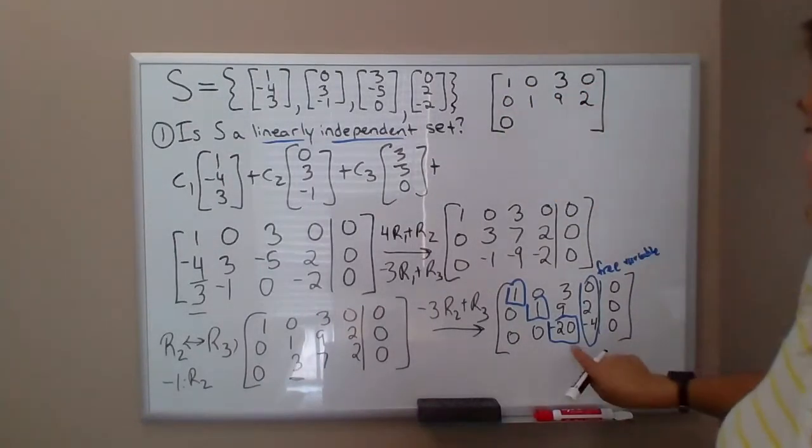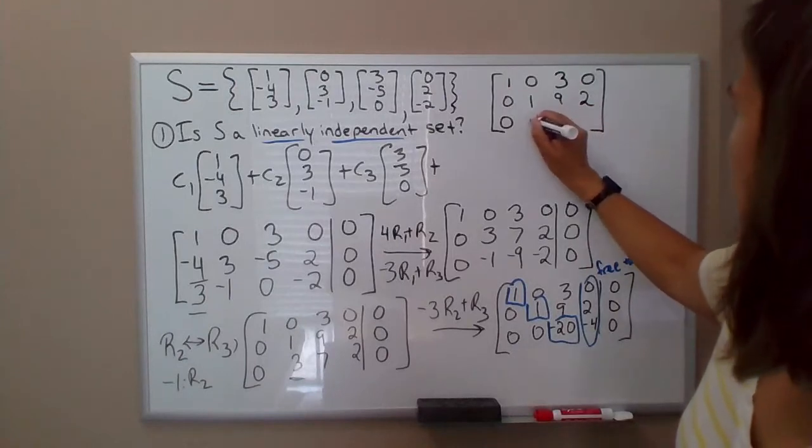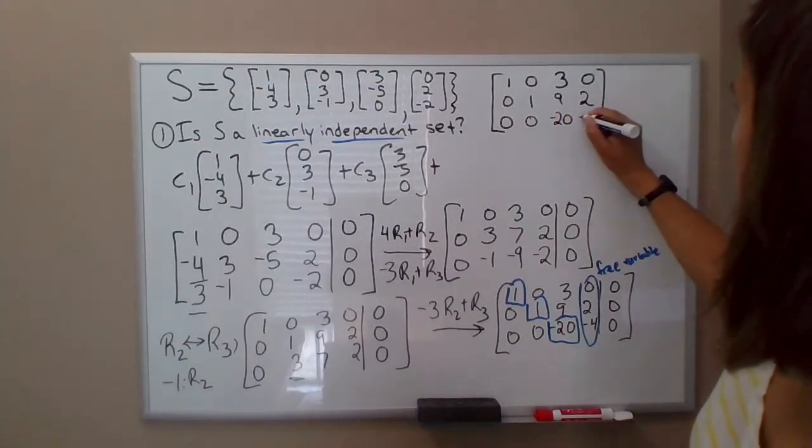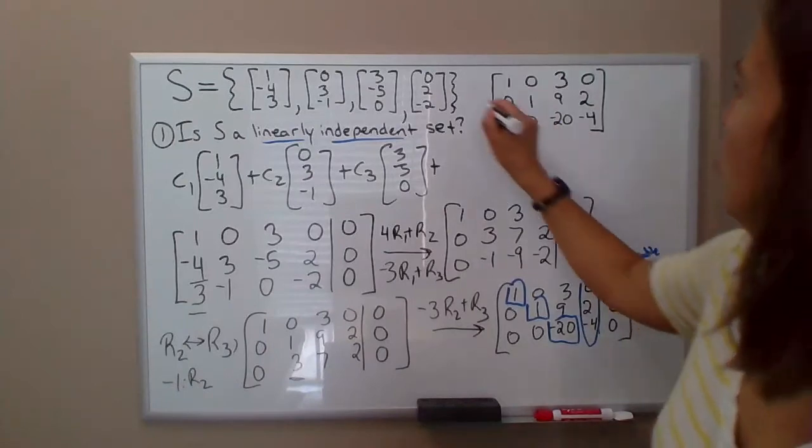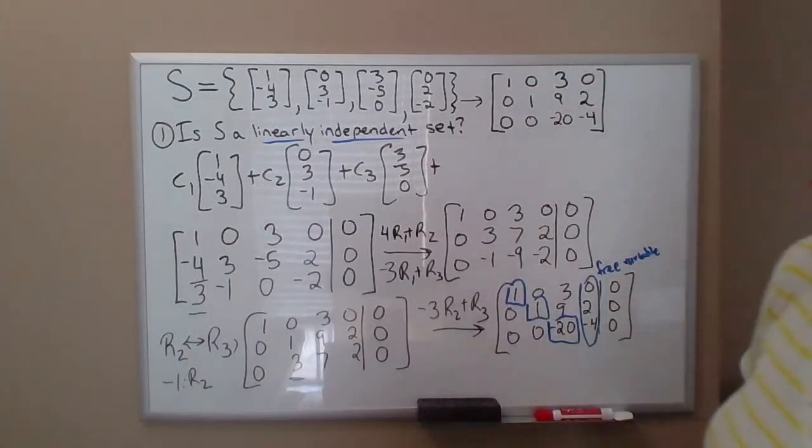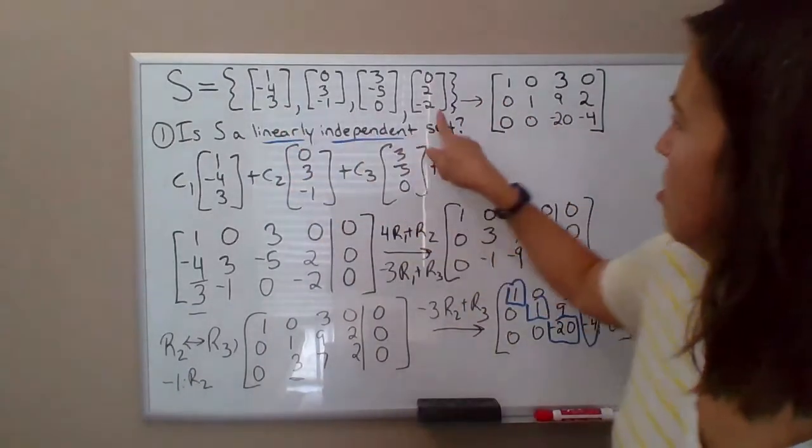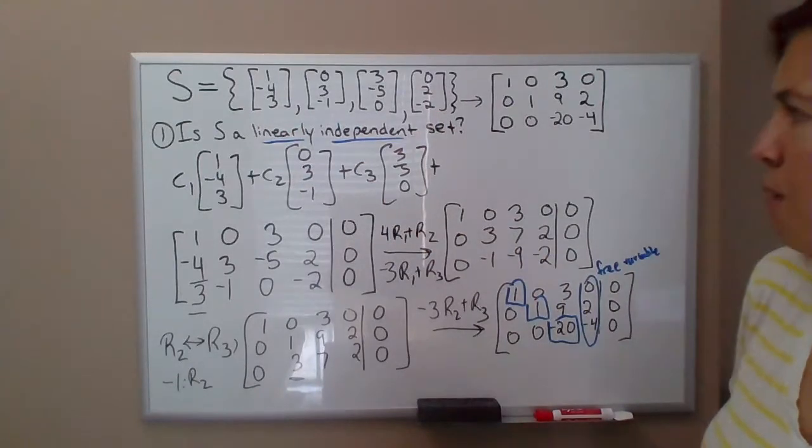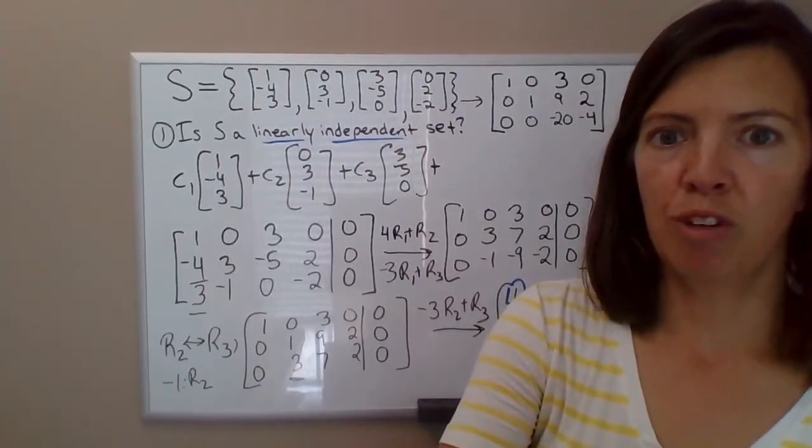So we reduced that matrix whose columns are these vectors to this. I'm going to use that moving forward in the next example video.